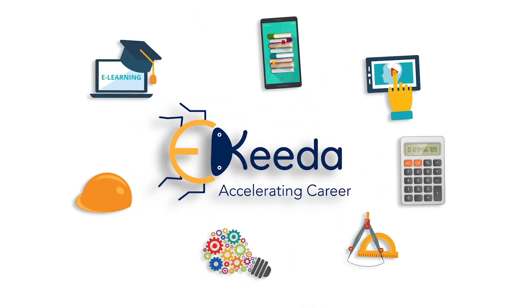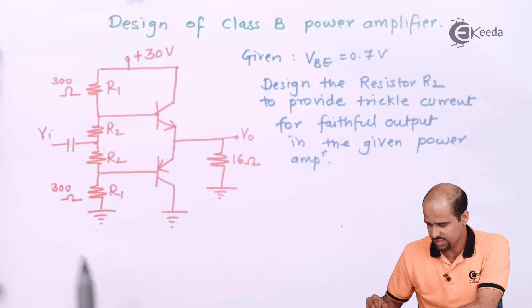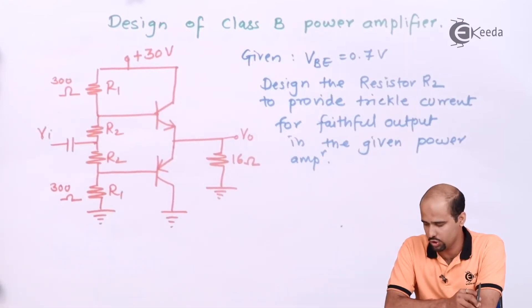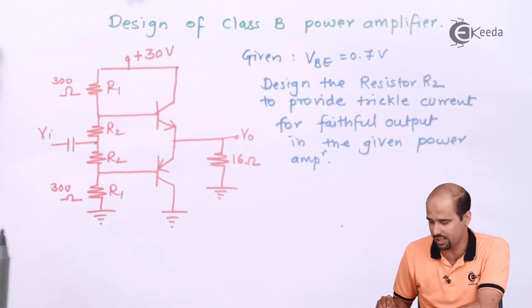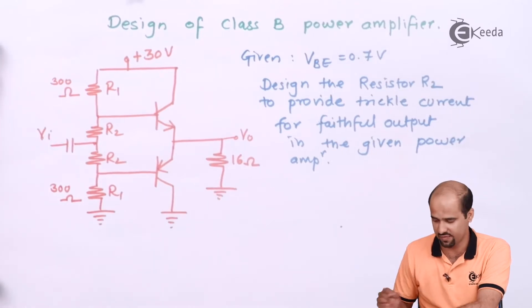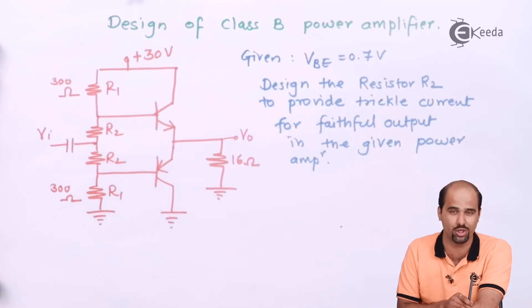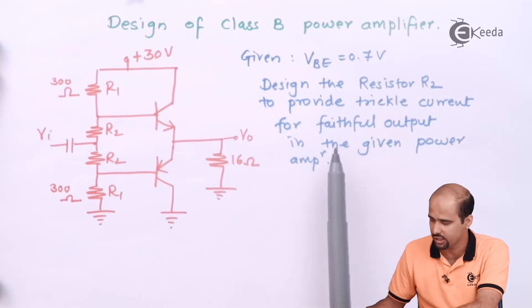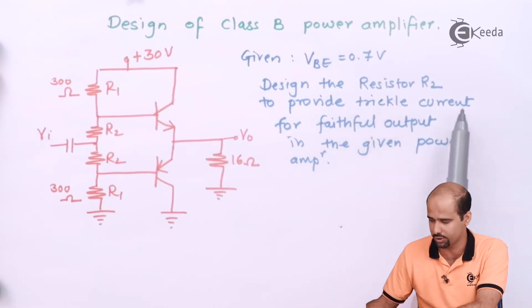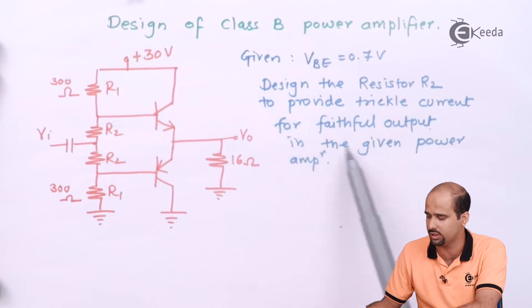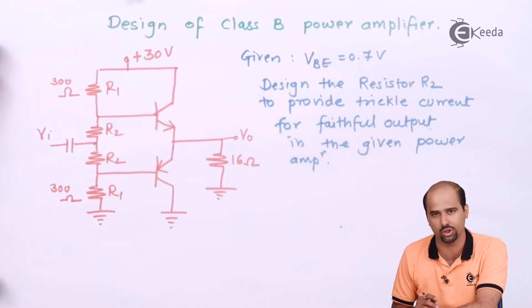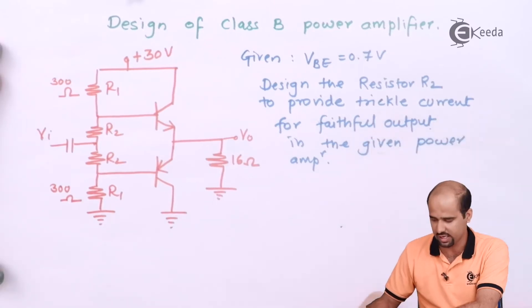Let's see how we'll get one particular circuit to design a Class B power amplifier to fulfill all the customer requirements. This is the circuit that is given. Most of the calculation values are given: 30 volts DC supply, 300 ohm and 300 ohm resistances, and load resistance of 16 ohm. Now we have to find the value of R2 such that to avoid crossover distortion and to get maximum efficiency with faithful output. They ask us: design the resistor R2 to provide trickle current for faithful output in the given power amplifier.